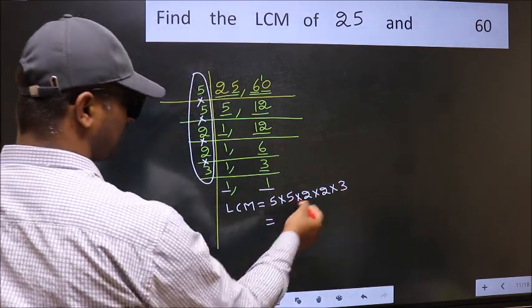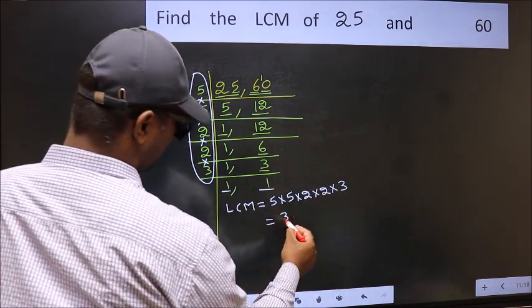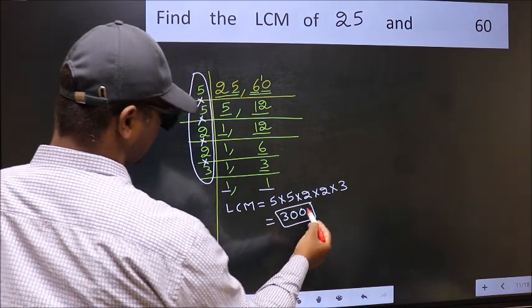When we multiply these numbers, we get 300 as our LCM.